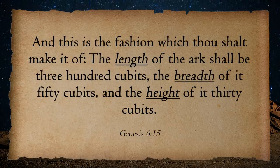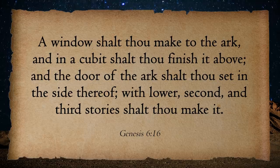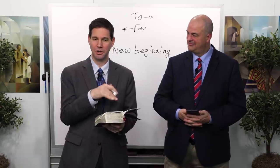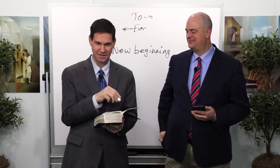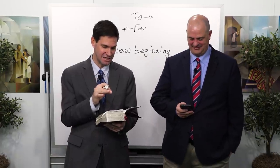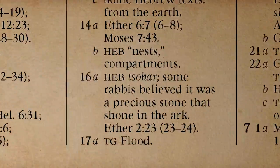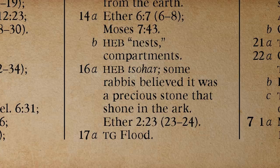Those of you who like marking your scriptures, make a note at verse 16, footnote A, where it mentions the window. Notice the Hebrew word there: sohar. Some rabbis believed it was a precious stone that shone in the ark. Fascinating — because if you look at the timing, you get Noah and the flood, and then the next story in chapter 11 that we'll finish today's episode with — the Tower of Babel. And it's at the Tower of Babel where you get your first connection to the New World with the Book of Mormon people, the Jaredites.